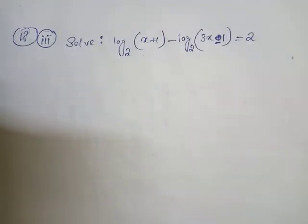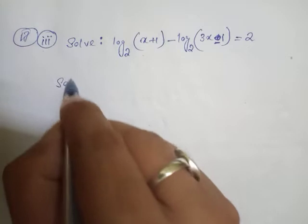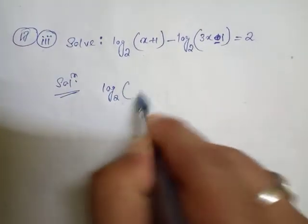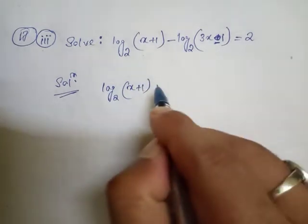We have to find the value of x, so how to solve it? Let's start with the solution. We have log base 2 of (x+1) minus log base 2 of (3x-1) equals 2.